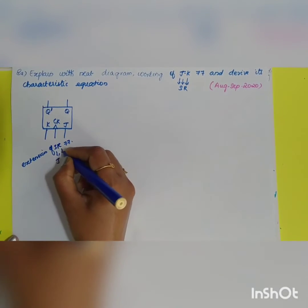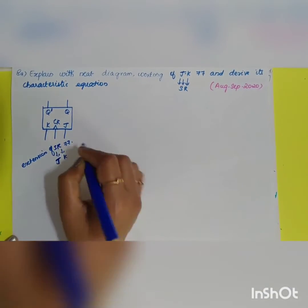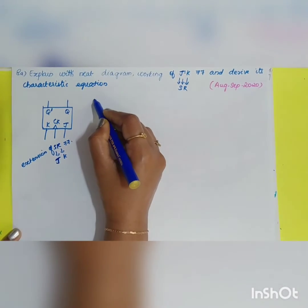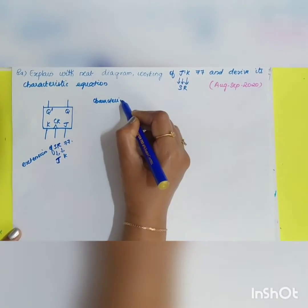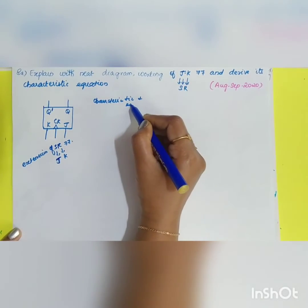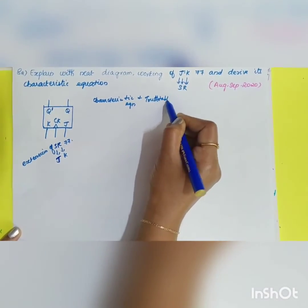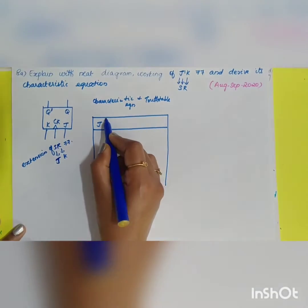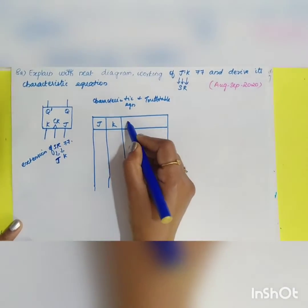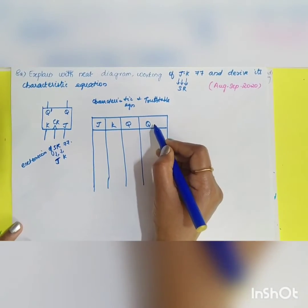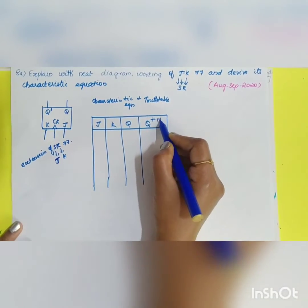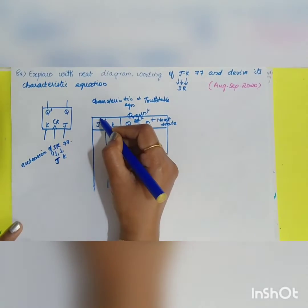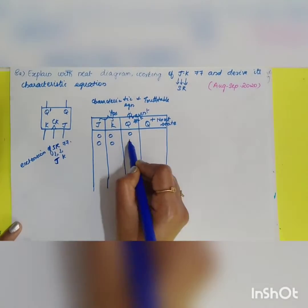The only difference in the truth table is in the last state, which is the toggle state. Now for the characteristic table and equation: the truth table has two inputs J and K, and we consider the present state Q and the next state Q+. The next state is taken as Q+, and the inputs are J and K.